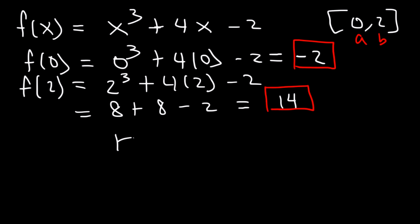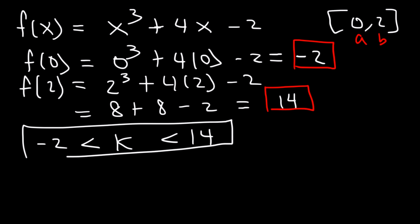Now keep in mind, k is between f of a and f of b. So k is between negative two and 14. And our goal is to show that there is a root, or a number that's equal to zero. So we've got to show that there's some value c where k is zero. And zero is between negative two and 14, so there is some value out there where k can be zero, because zero is within its range.